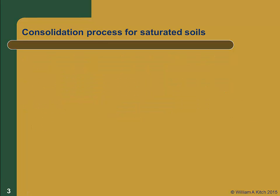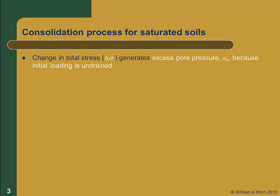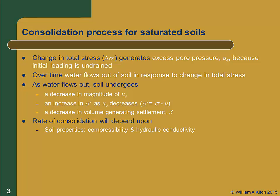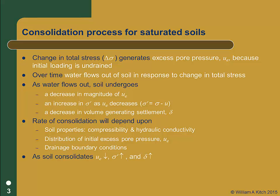Before we start the derivation, let's briefly review the consolidation process. Consolidation starts with a change in total stress that initially generates excess pore pressure. As time passes, water flows out of the soil. As water flows out, three things happen simultaneously: excess pore pressure decreases, effective stress increases, and the soil volume decreases. The rate at which consolidation occurs depends on the soil's compressibility and hydraulic conductivity, the initial distribution of excess pore pressure, and the drainage conditions at the soil boundaries. So during consolidation, excess pore pressure is decreasing, effective stress is increasing, and settlement is increasing.